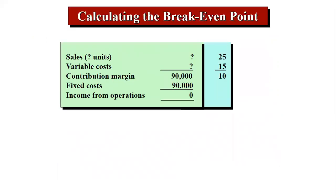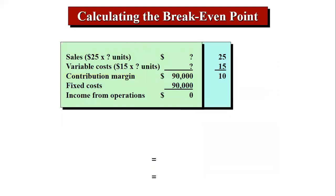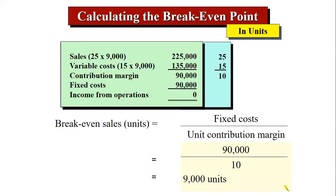To calculate the break-even point: at break-even, fixed costs and contribution margin are equal. The formula is fixed cost divided by contribution margin per unit. For example, fixed cost of 90,000 divided by a contribution margin per unit of 10 equals 9,000 units — your break-even sales in units.